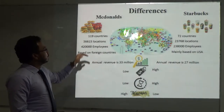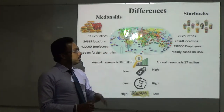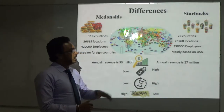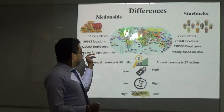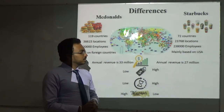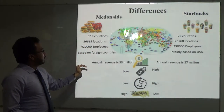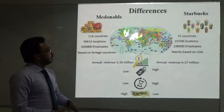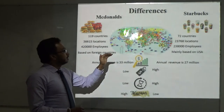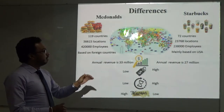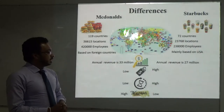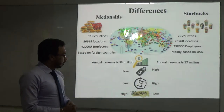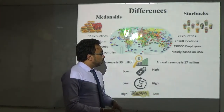These are the differences between McDonald's and Starbucks. McDonald's operates in over 100 countries while Starbucks operates in 72. McDonald's has more employees and outlets. McDonald's bases its business globally while Starbucks is mainly based in the USA. McDonald's earns annual revenue of more than 33 billion while Starbucks earns 27 billion. Starbucks prices are very high while McDonald's prices and waiting times are lower. McDonald's foods provide a very high calorie percentage while Starbucks provides a lower calorie percentage.